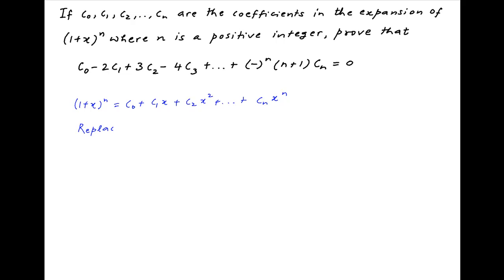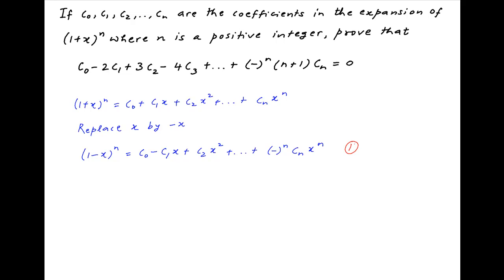Now replace x with minus x in this expression. We get (1 - x)^n = c0 - c1*x + c2*x^2 + ... + (-1)^n * cn * x^n. Let's call this result 1.